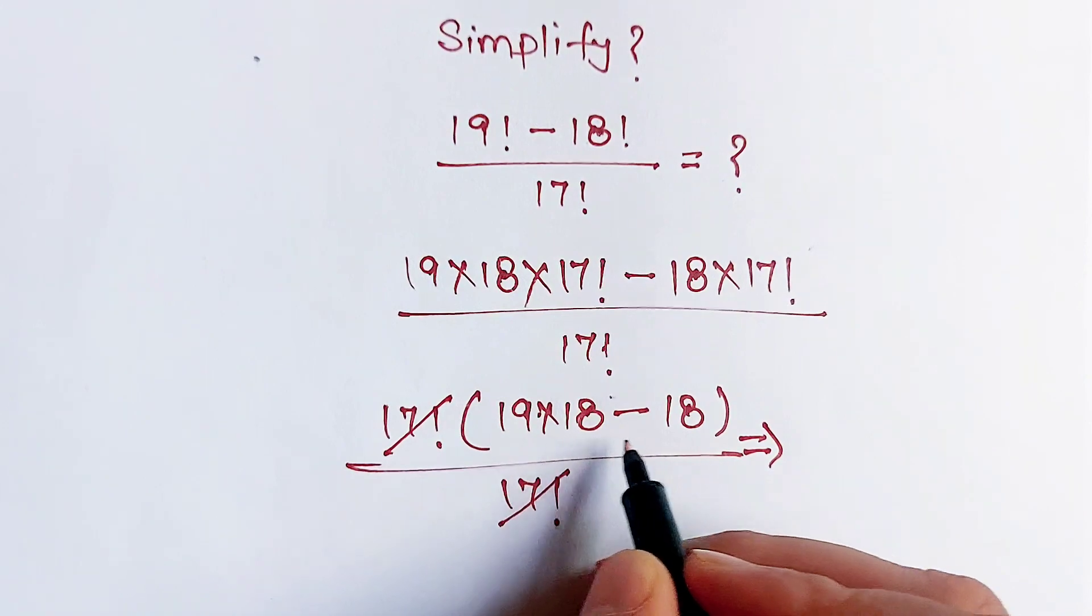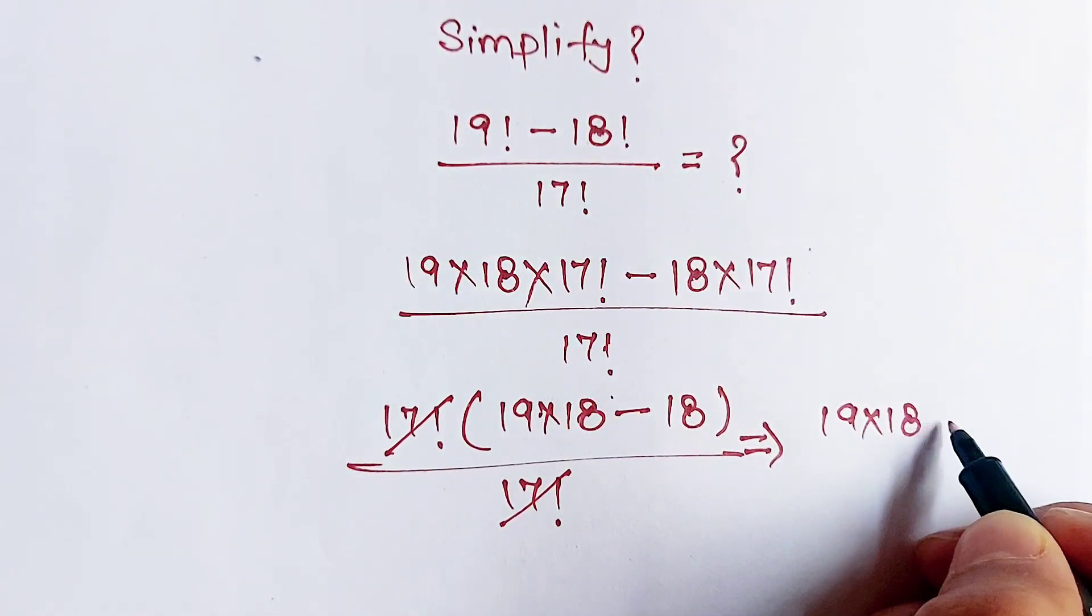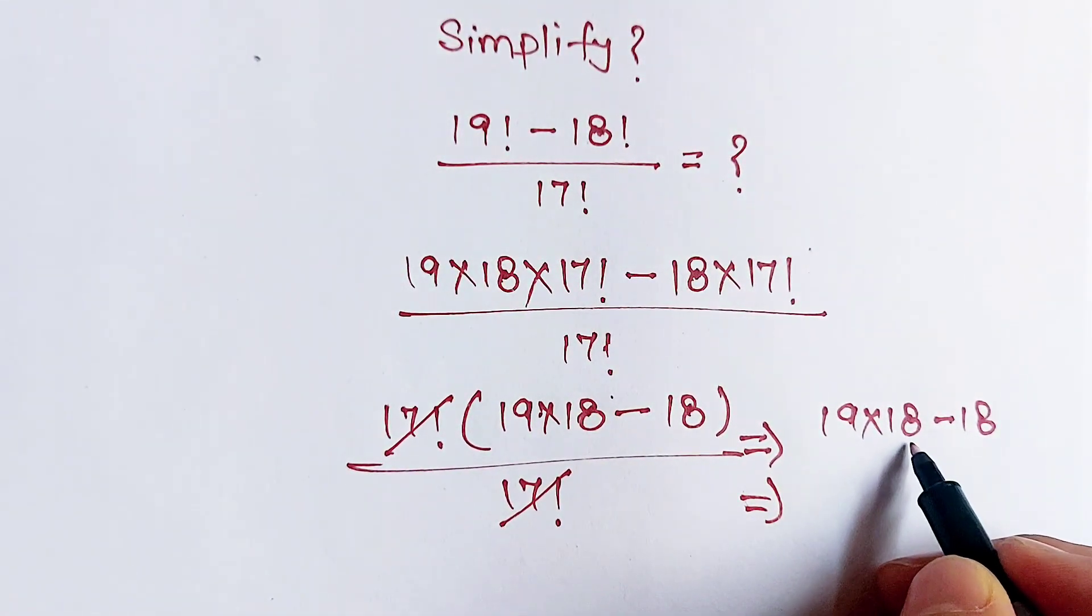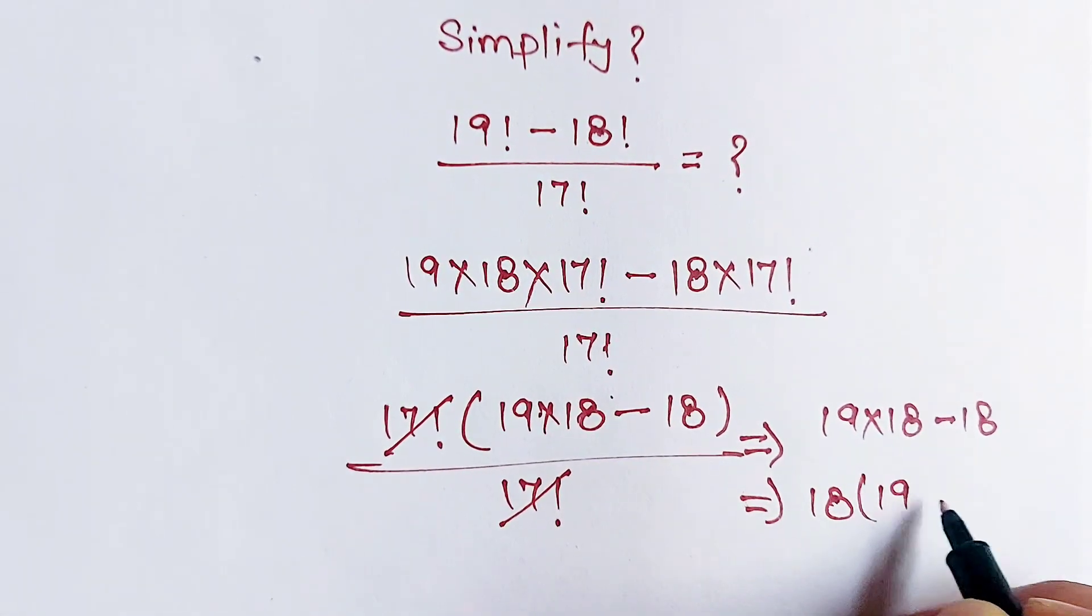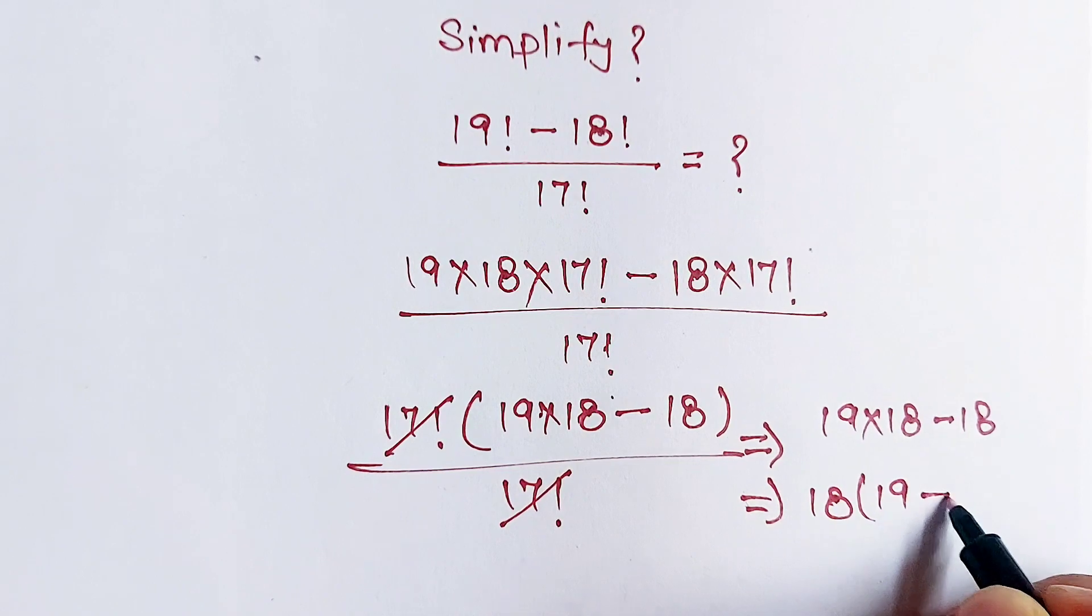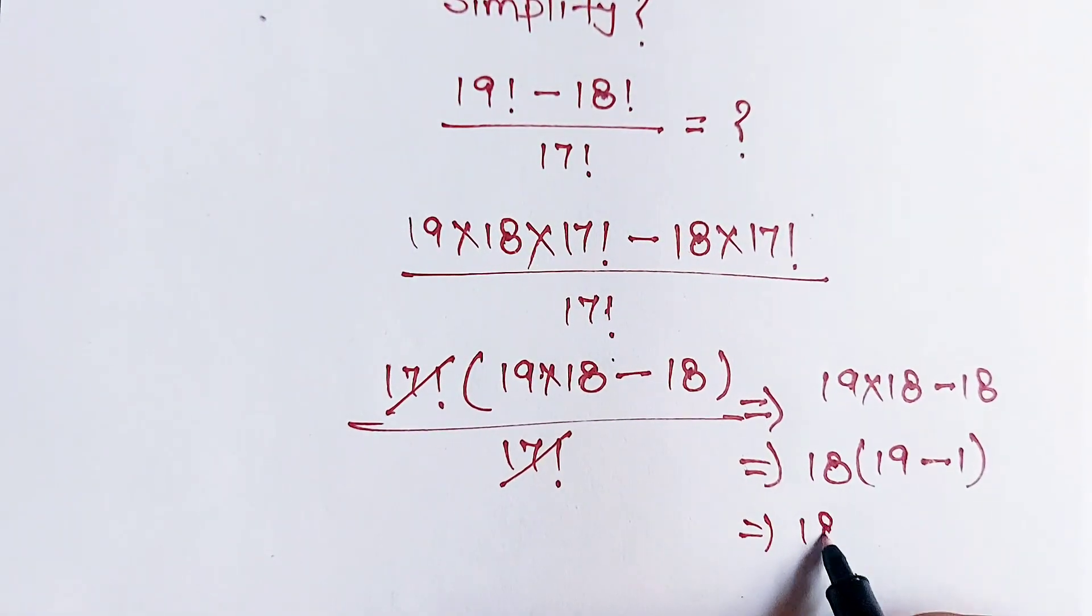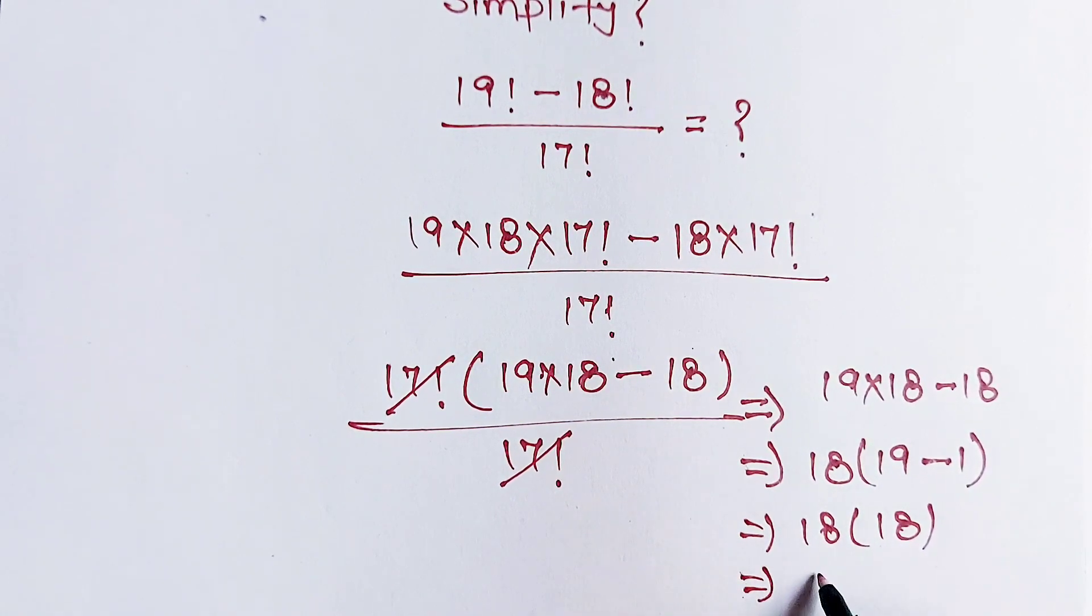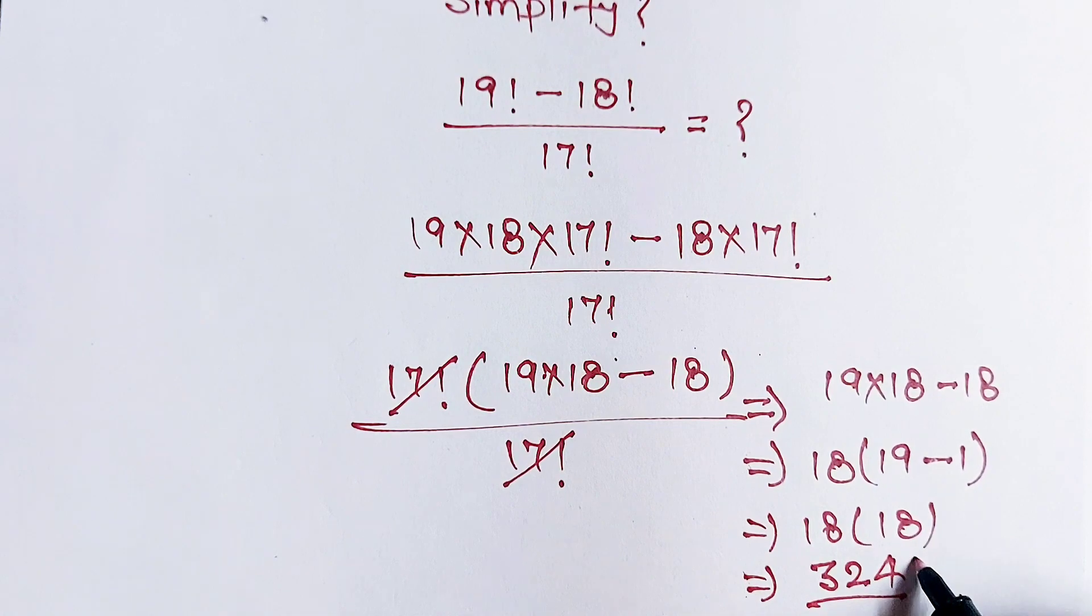And now we will write as 19 into 18 minus 18. Now we will take out 18 as a common term, and now 19 minus 1. Here 18 multiply 19 minus 1, 18. And 18 into 18 multiply will become 324. And this is our final answer.